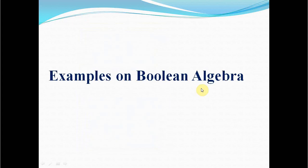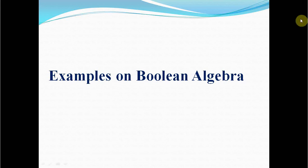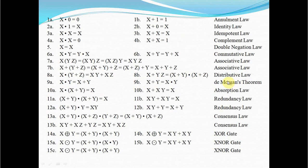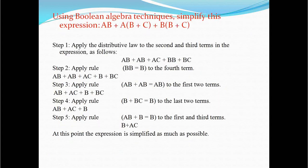In the second part of this session, we look at examples on Boolean Algebra. The need for Boolean algebra is to simplify and minimize the number of gates. We can use Boolean algebra laws such as commutative, associative, distributive, De Morgan's, double negation, complement, independent, identity, and annulment laws to solve different Boolean equations.